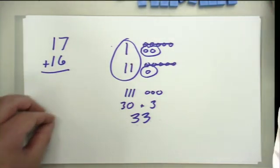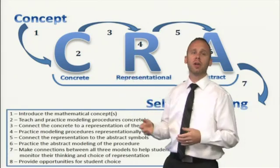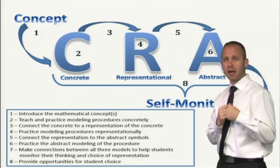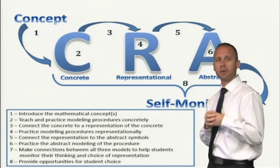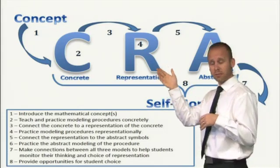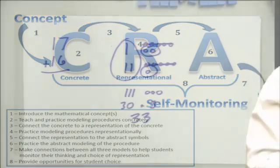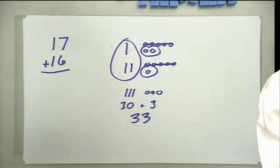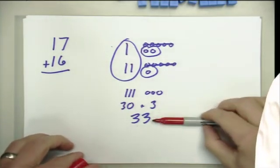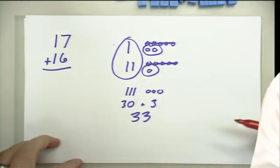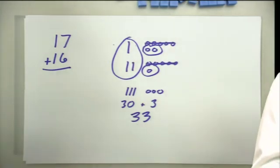When students are getting good with the representation, we need to make that next step and get them ready for the abstract. That doesn't mean putting our pictures aside — we need to use those pictures to teach the transition into what's going on abstractly. There's always going to be some level of abstractness in a problem, whether you're giving that to students in written form or having students write their answer. If students write something with digits, there is some level of abstractness.